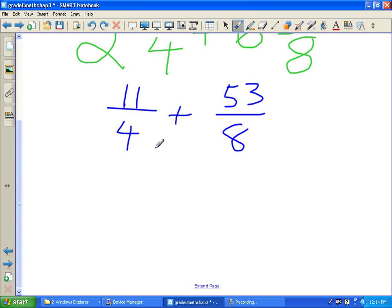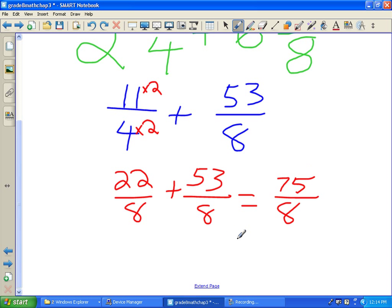Now that we've changed them to both fractions, the bottoms are not the same. How do I make this four and eight have the same bottom? All I've got to do is times this by two. And then this will be twenty-two over eight plus fifty-three over eight. And my grand total will be seventy-five over eight. Let's change that to a mixed number. Well, I know eight times eight is sixty-four. Nine times eight is seventy-two. So it'll go in nine times, and there will be three left over out of eight. And there's our answer.